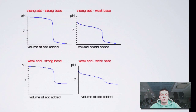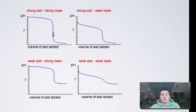Normally when you do a titration you won't plot one of these curves. But if we just take this first one as an example — strong acid, strong base — what this is showing us is if we start with a strong base in our flask and we add a strong acid to it, what will happen to the pH as we go along. This vertical part that you can see is where we're going to see the colour change in our indicator, because this is what is called the equivalence point.